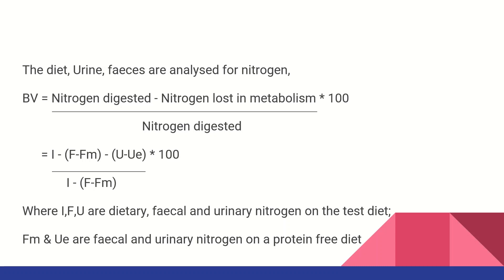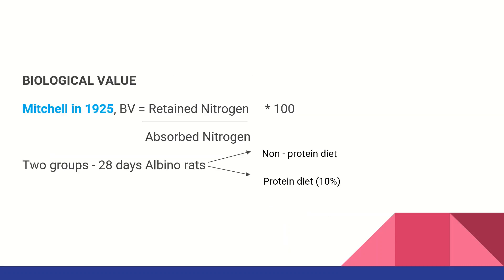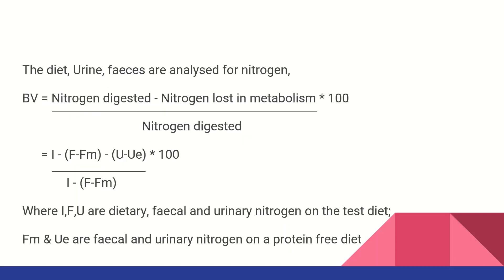Fm and U are fecal and urinary nitrogen on a protein-free diet. I, F, and U are dietary, fecal, and urinary nitrogen on the tested diet. The tested diet is the protein group, and the protein-free diet is the non-protein group.